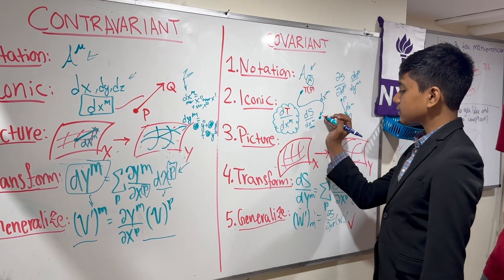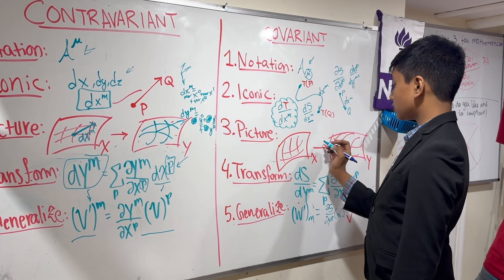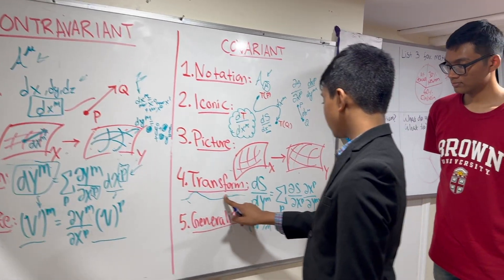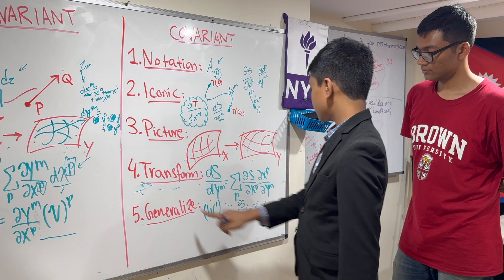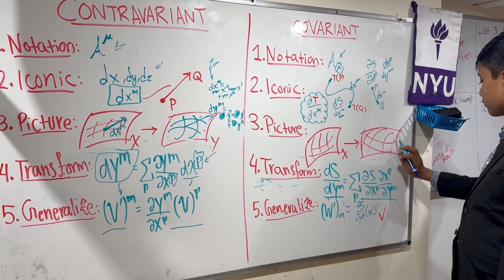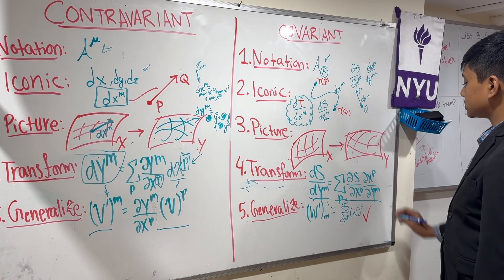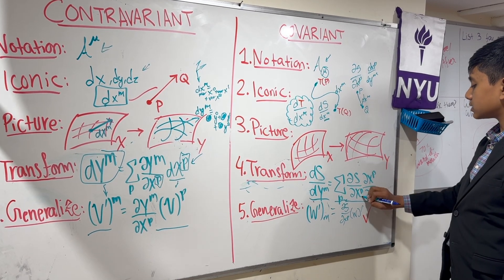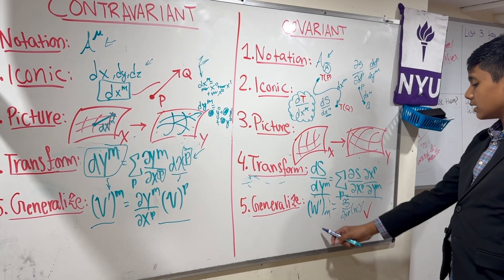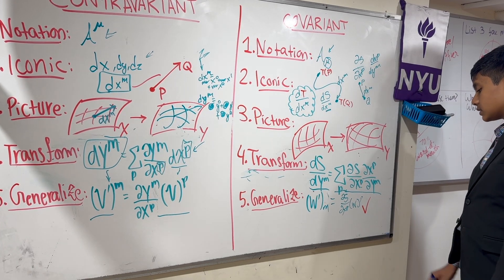Essentially, a covariant is kind of like 1 over a contravariant. Take that with a grain of salt. When transforming between two reference frames here, we essentially just want to use the regular multivariable chain rule to get partial x, partial xp, partial xp, partial ym. And then y1' is equal to partial x, partial xp, double yp.